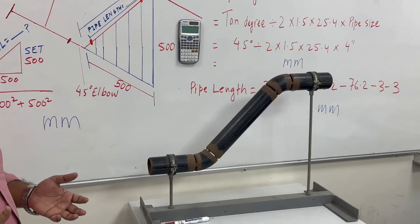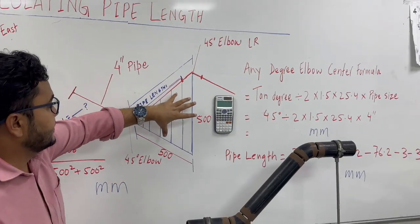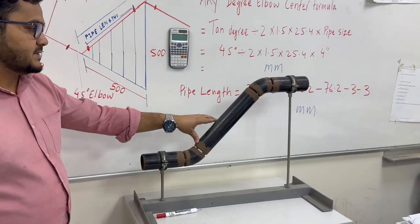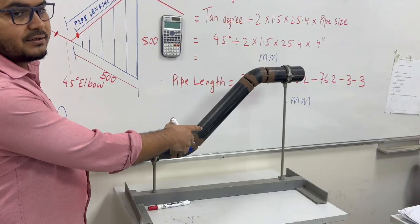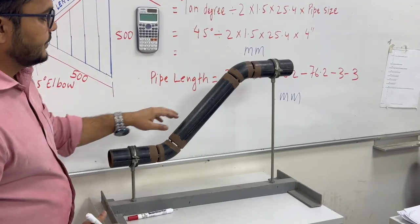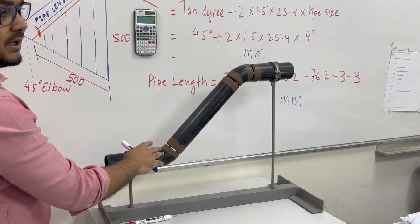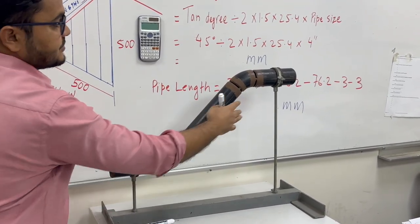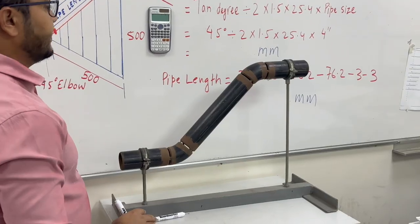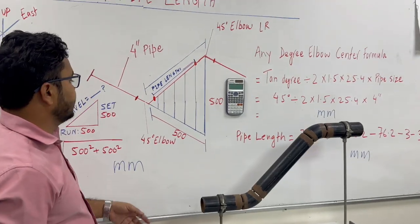Today's topic: how to calculate pipeline. This is our diagram. This is our 45 degree offset. This is for travel — we have a 45 degree long radius elbow. This is also a 45 degree long radius elbow. This is one side and this is called the run.